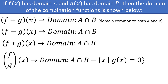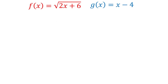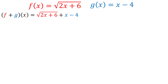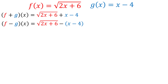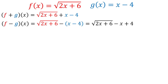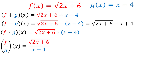Let's look at an example. Say we have f(x) = √(2x + 6) and g(x) = x − 4. Let's find the four combination functions: f + g of x is √(2x + 6) + x − 4. f − g of x is √(2x + 6) − (x − 4), which simplifies to √(2x + 6) − x + 4. For f × g of x, we have √(2x + 6) · (x − 4). For f ÷ g of x, we have √(2x + 6) divided by (x − 4).